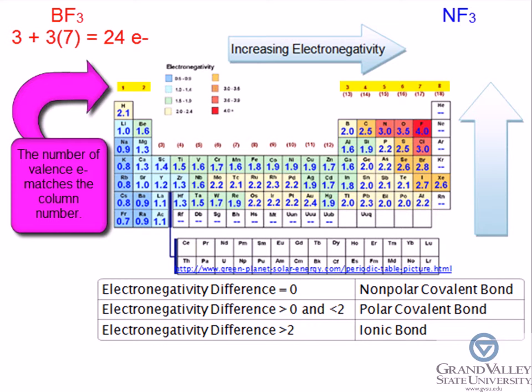The total number of valence electrons in NF₃ is 26: 5 electrons from nitrogen and 7 electrons from each fluorine atom.